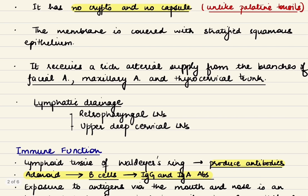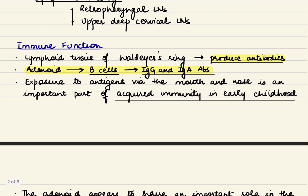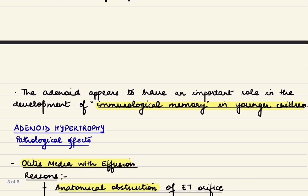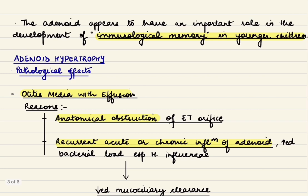The lymphoid tissue of Waldeyer's ring helps in producing antibodies. The adenoid produces B cells which give rise to IgG and IgA antibodies. Exposure of antigens via mouth and nose in early childhood is an important part of acquired immunity, and the adenoid appears to have an important role in the development of immunological memory, especially in younger children.